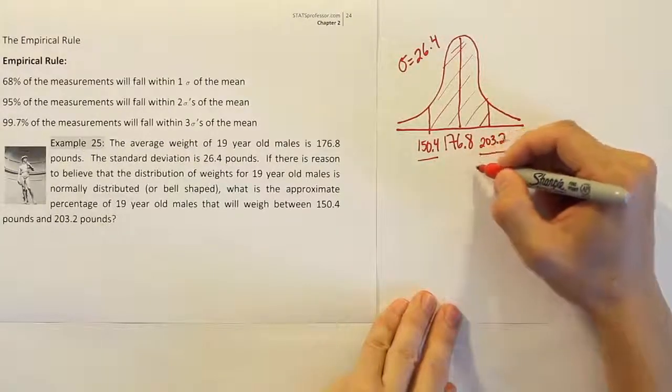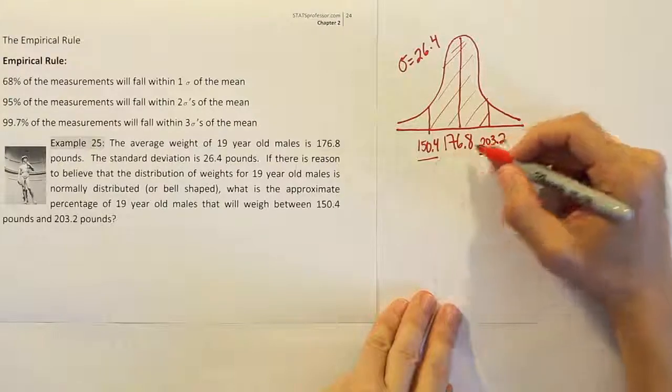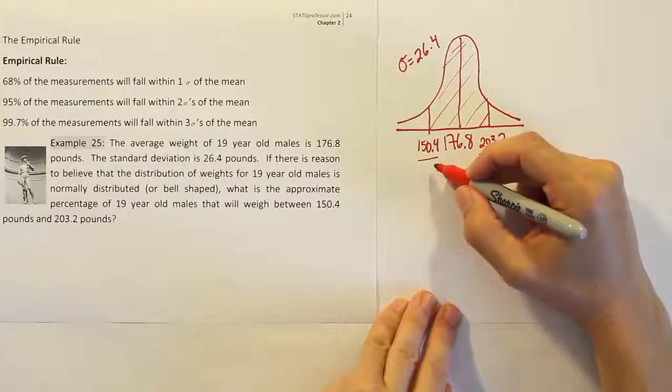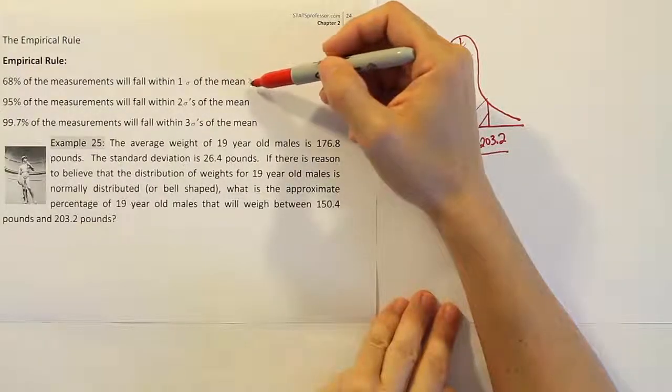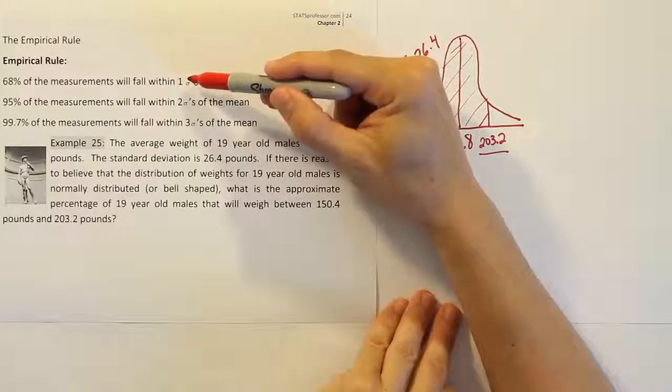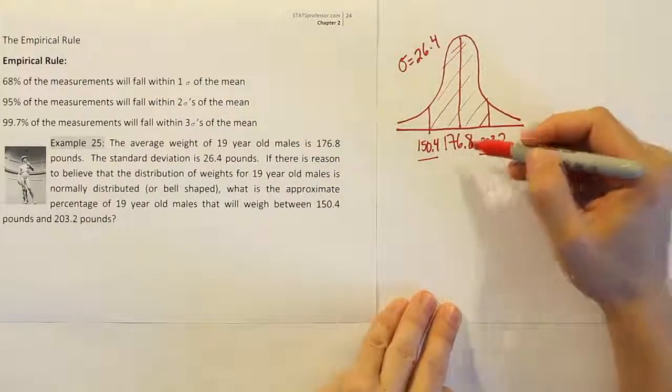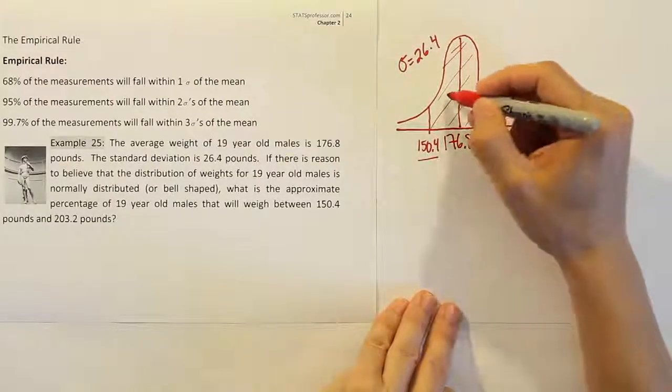Well, since it was just one standard deviation above and just one standard deviation below, right? That's all I did. I added one time, 26.4, and one time I took it away. Then that means I can apply this step of the empirical rule, which says, hey, 68% of the measurements will fall within one standard deviation of the mean. And one standard deviation of the mean means one above and one below. That means the total area in here is 68%.